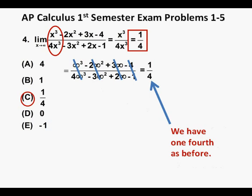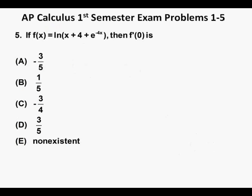Problem 5. If f of x equals the natural logarithm of quantity x plus 4 plus e to the power of negative 4x, then f prime of 0 is, and we have our five answer choices, a through e.